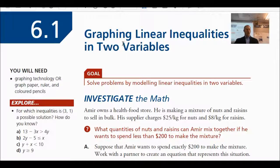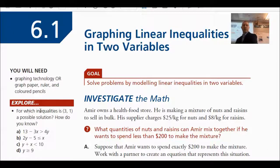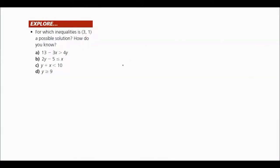Section 6.1 is entitled 'Graphing Linear Inequalities in Two Variables.' We just finished doing the example balancing two part-time jobs. Over here on the side are inequalities in two variables x and y. Take a moment to look at those and answer this question: for which inequalities is the point (3, 1) a possible solution?